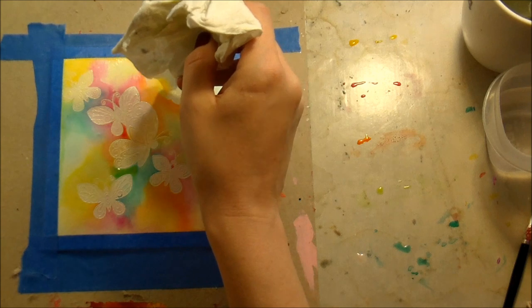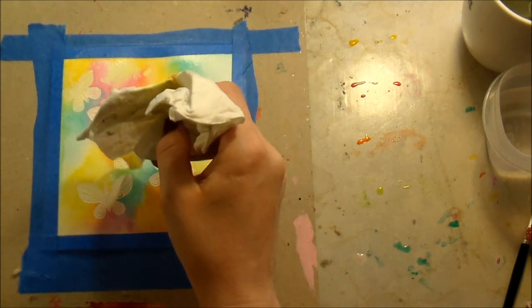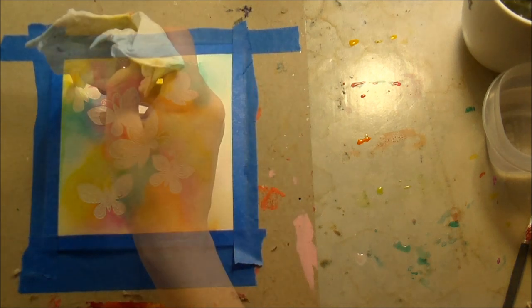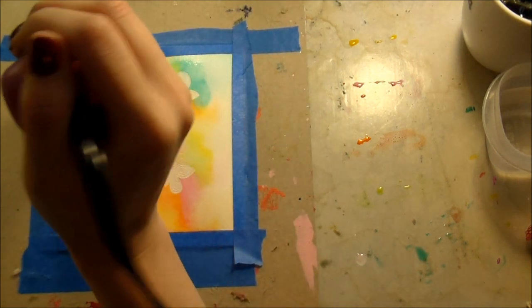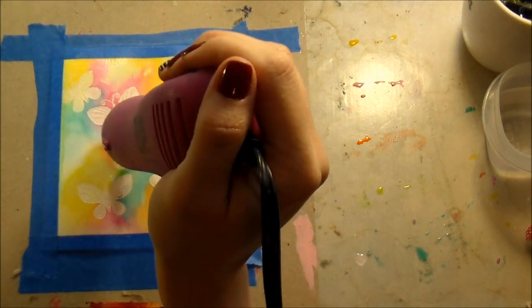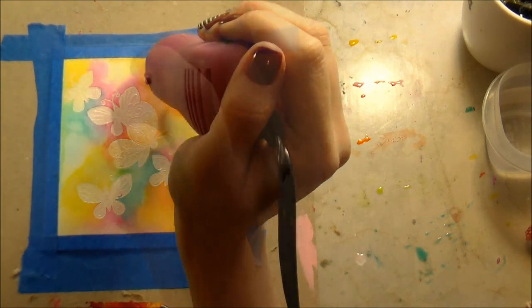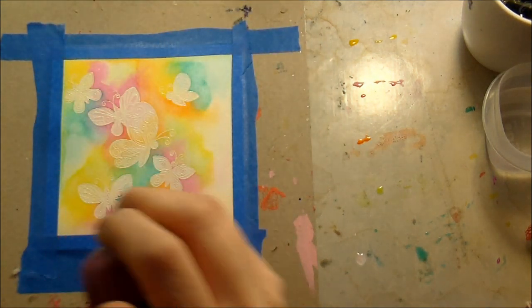And then I went in with that same rag and just kind of dotted up any of the areas where the ink was pooling. I found when heat drying something if you have areas that are super wet comparative to the ones that are really dry it really gives you some hard edges which again I think is very pretty but not what I was going for.